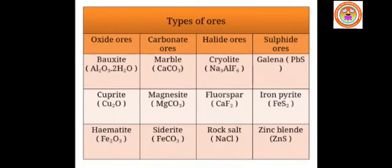The formula for bauxite is Al₂O₃·2H₂O. Bauxite is the chief ore of the metal aluminium. Cuprite has the formula Cu₂O and is an ore of the metal copper. Hematite is the ore of iron, with the formula Fe₂O₃, ferric oxide. These are examples for oxide ores.